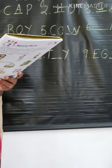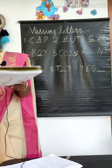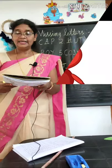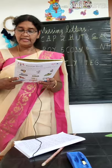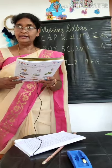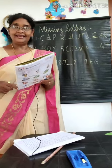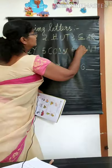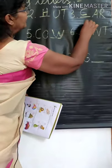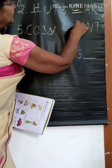Sixth one is ANT. Which is the missing letter? A. Very good. Capital letter A.